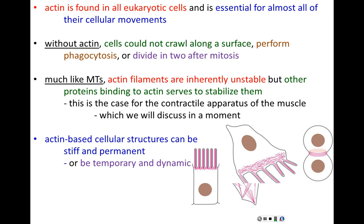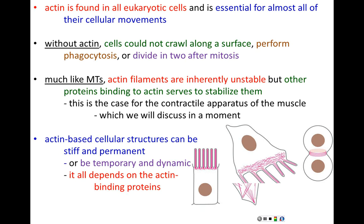Two cells that have undergone mitosis are about to divide. What pinches one cell into two — what separates these two daughter cells from one another — is a contractile ring made up of actin. That's transient as well, because once the two cells have divided, that contractile ring is no longer needed. It all depends on accessory actin binding proteins that bind to and stabilize actin, or bind to and disassemble actin.